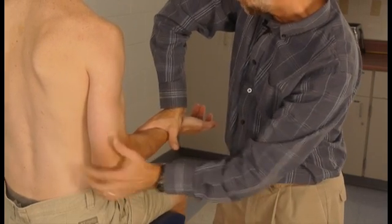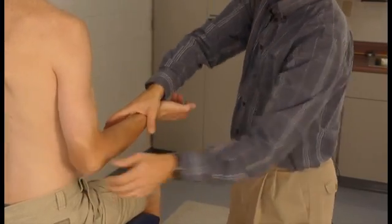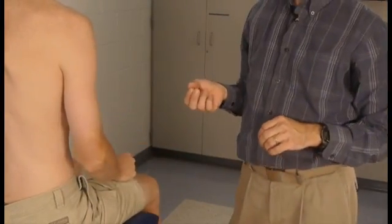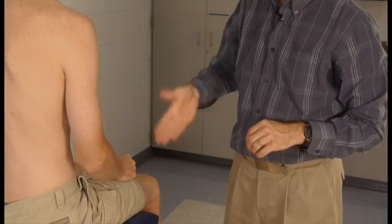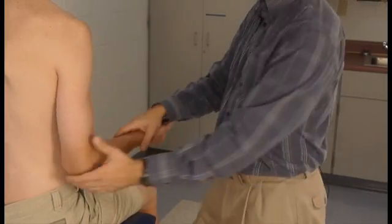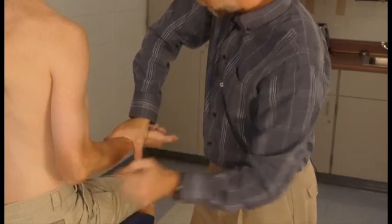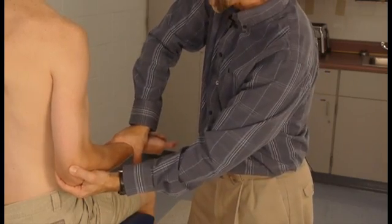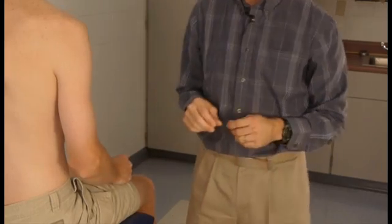Using your forearm to make that line of force does two things. One thing that it does is it ensures that you are applying force in the direction that you think you are. The other thing that it does is it ensures good body mechanics for you, getting your forearm behind the force rather than just trying to push down with your fingers or something like that.